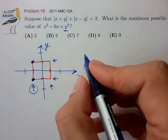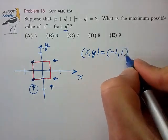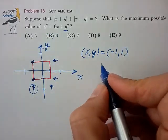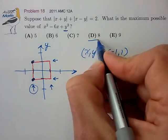So let's pick the upper left corner where x, y is equal to minus 1, 1. And then this expression is just equal to 1 plus 6 plus 1, which is equal to 8, for choice D.